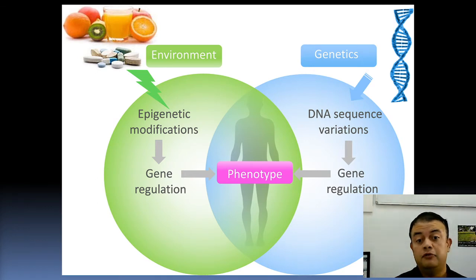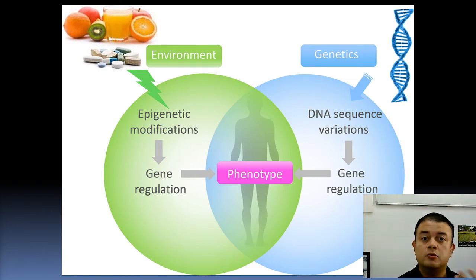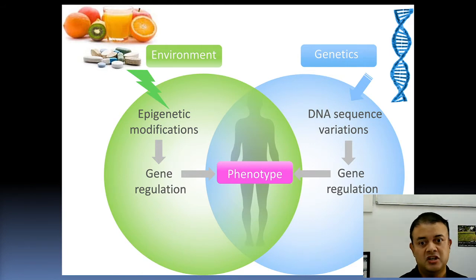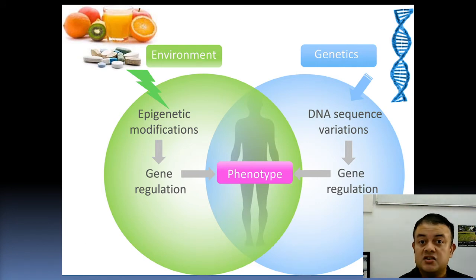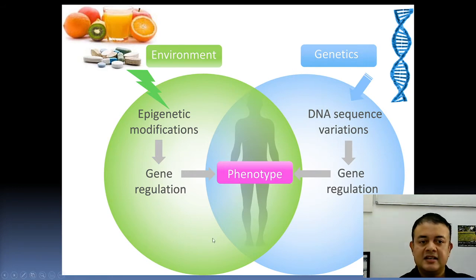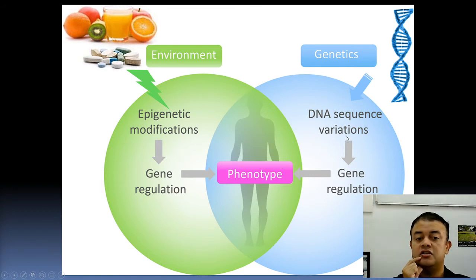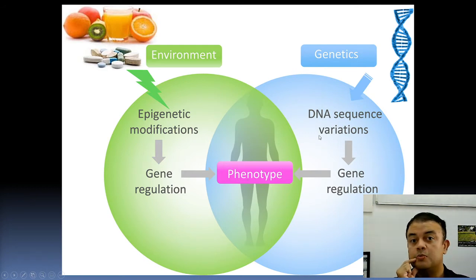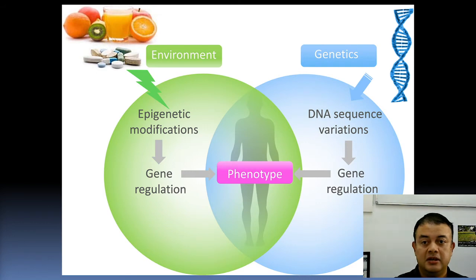Epigenetics is really important for understanding how the environment modulates the phenotype — usually through epigenetic modifications. Some of these epigenetic changes can also be transmitted across generations, at least for a few generations, for example methylation. In classic genetics, DNA sequences are changed because of the differential survival of certain variants through natural selection, and the DNA sequence directly changes the phenotype by expressing different proteins.